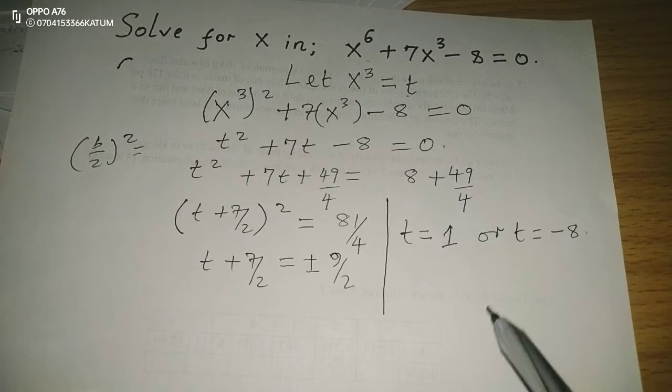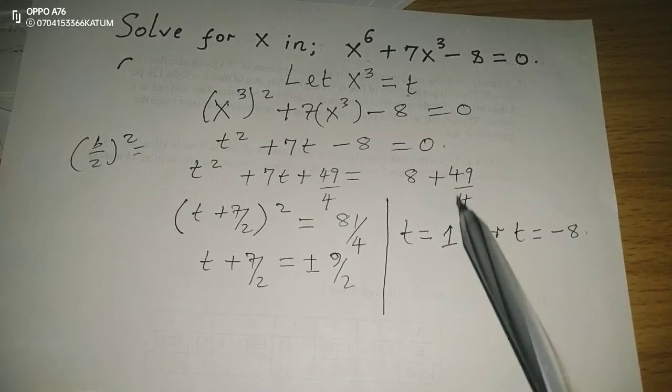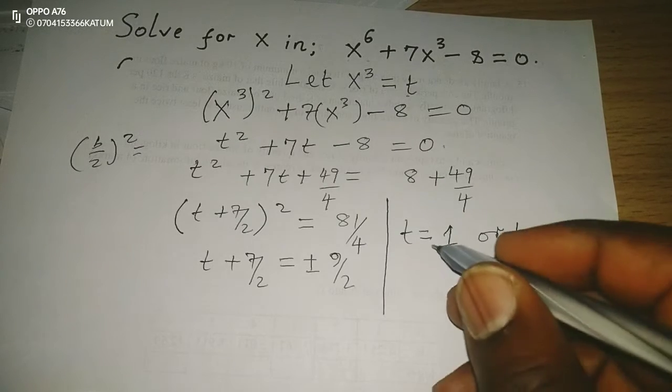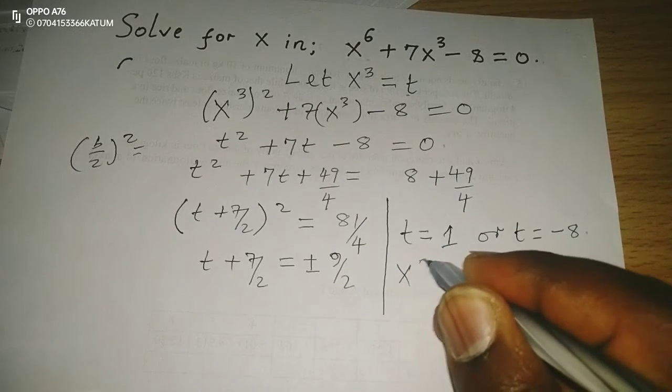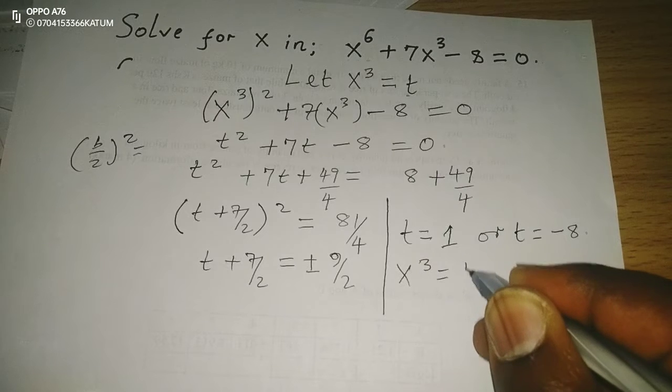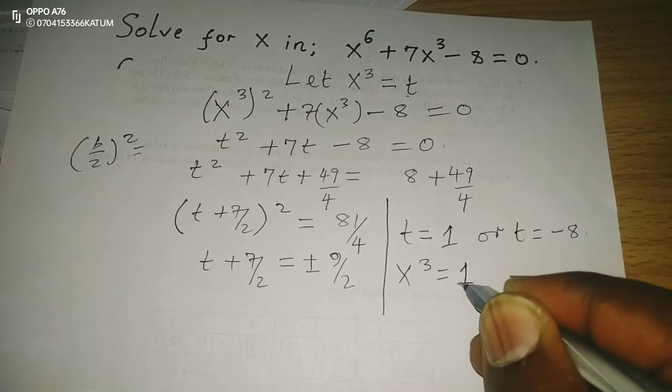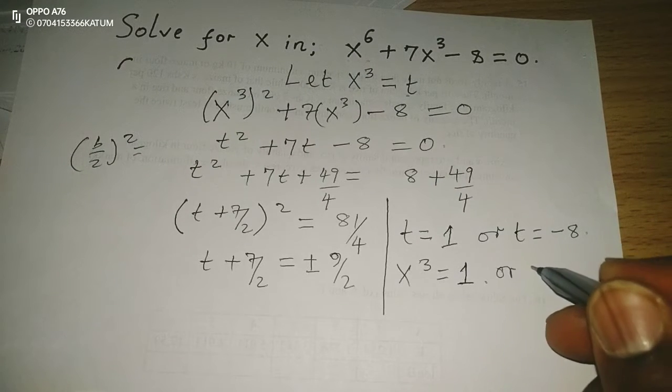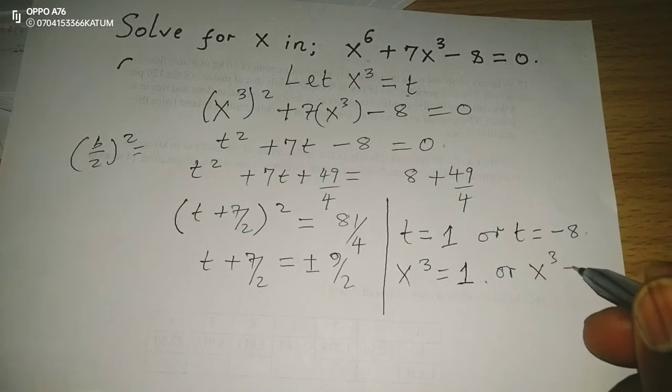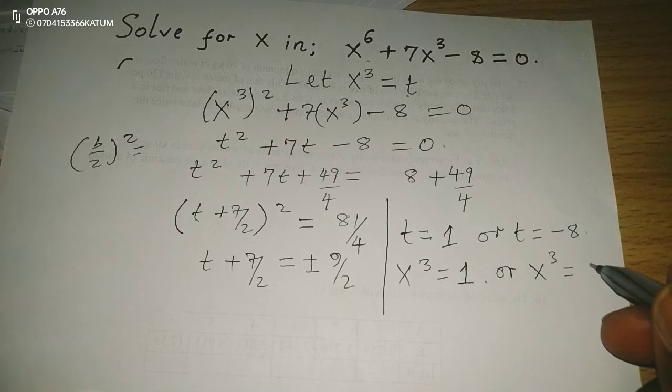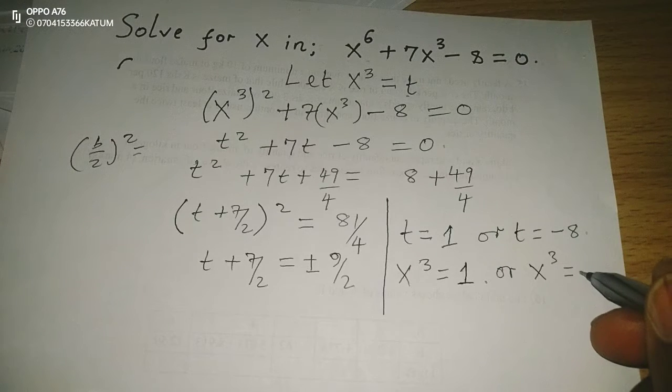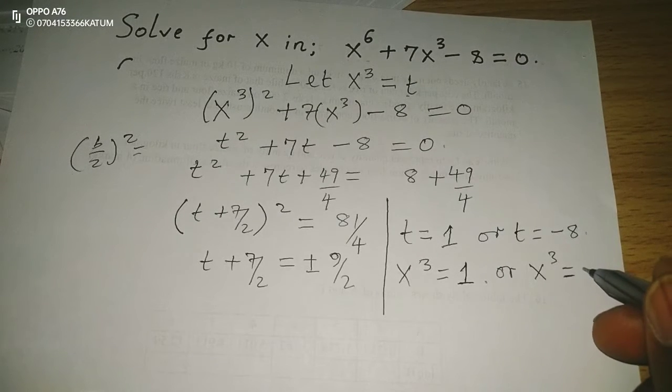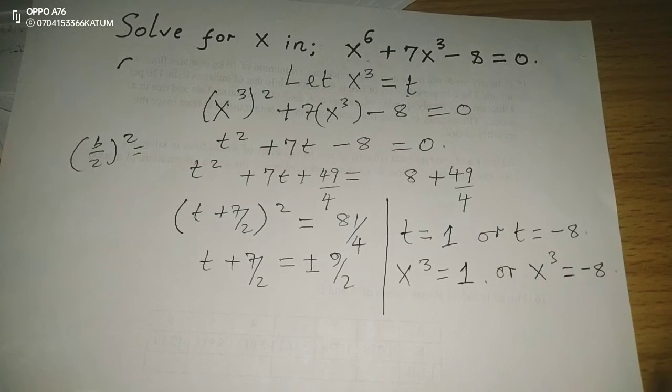So these are the two values of t, but remember, whatever we had led to be t is x^3. Therefore, x^3 = 1, x^3 = 1, and also x^3 equals to negative 8. So,